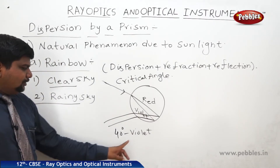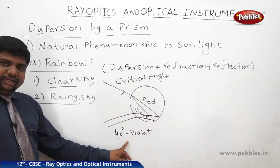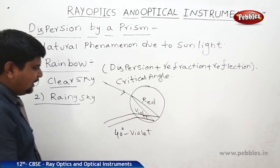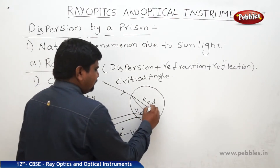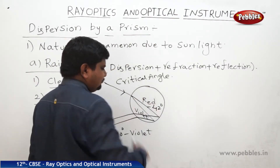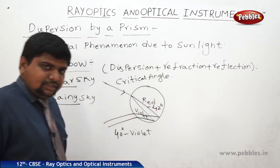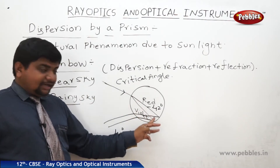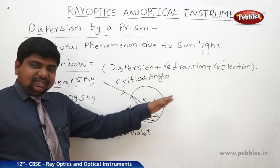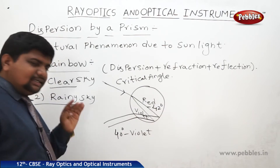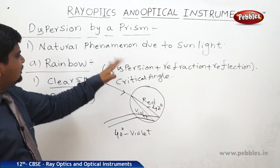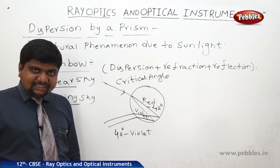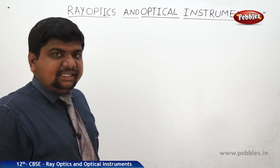For violet, it bends at 40 degrees; for red, it bends at 42 degrees. Due to this dispersion, refraction, and total internal reflection, the rainbow appears to human beings.